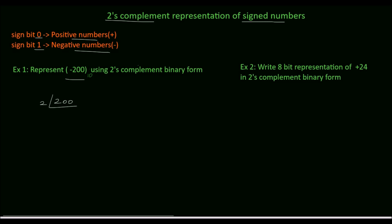Divide 200 by 2: the quotient is 100 and the remainder is 0. Again divide by 2: the quotient is 50 and the remainder is 0. Divide by 2: quotient is 25 and the remainder is 0. Divide by 2: quotient is 12 and the remainder is 1.